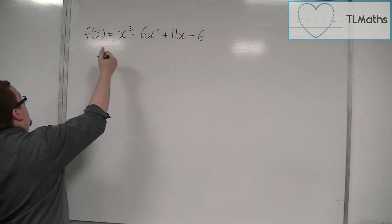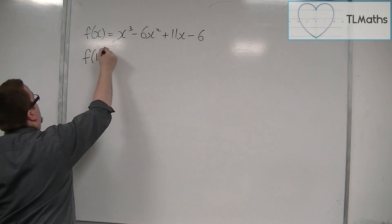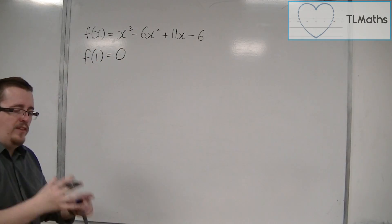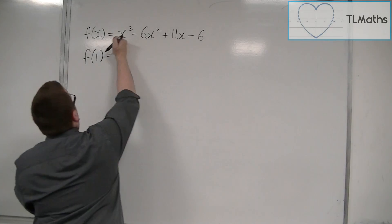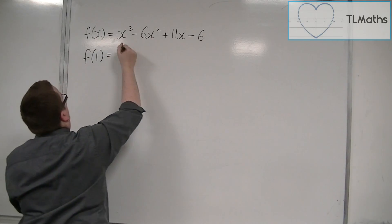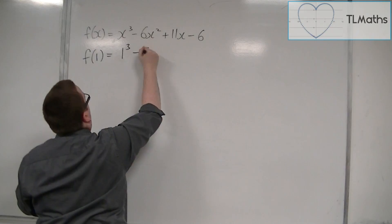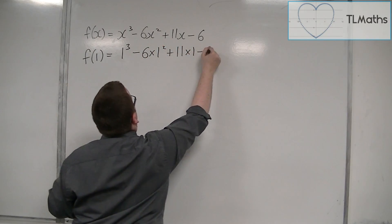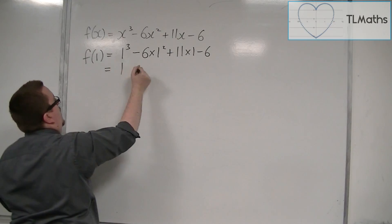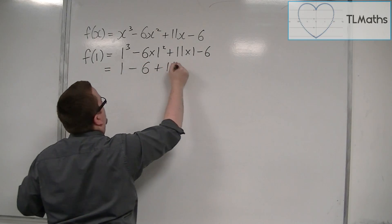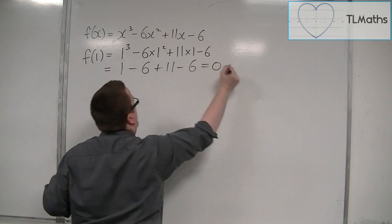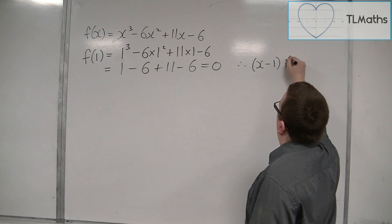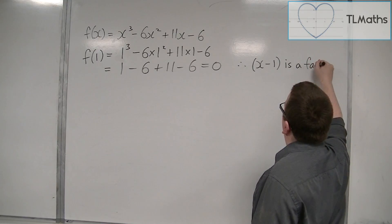We know that f(1) is equal to 0 — we showed that in the previous video. So, using the factor theorem, I'll show it again: 1 cubed, take away 6 lots of 1 squared, plus 11 lots of 1, take away 6. That gives us 1 − 6 + 11 − 6, which is 0. Therefore, x minus 1 is a factor of f(x).